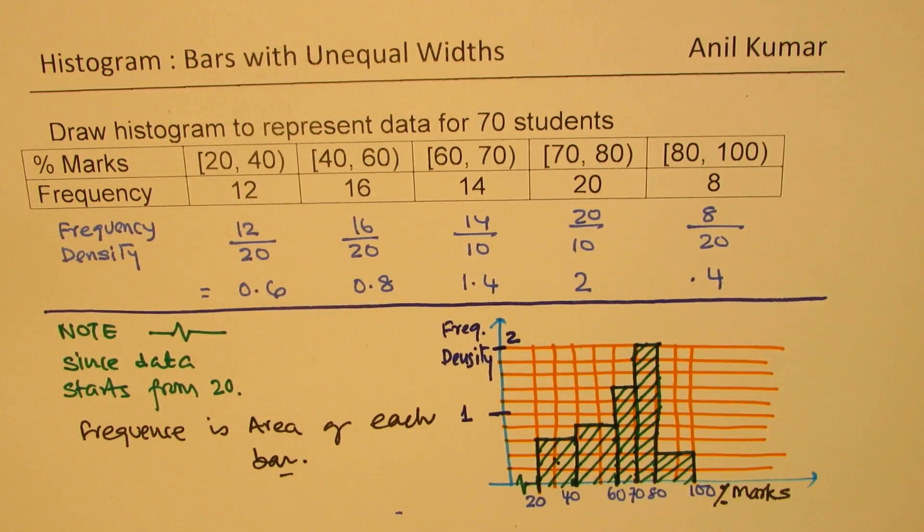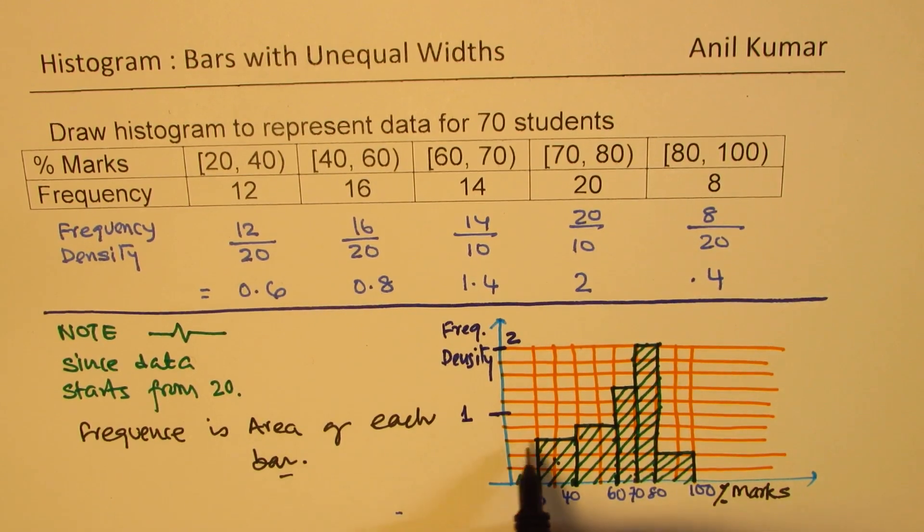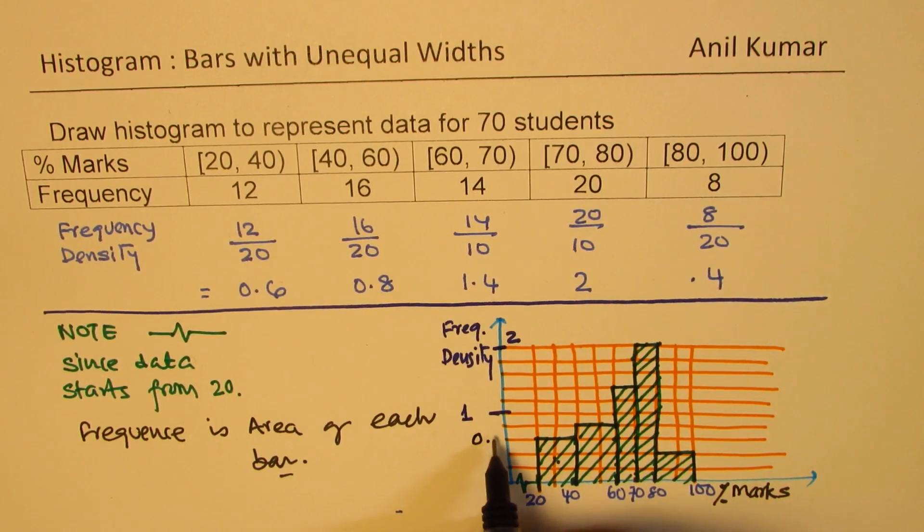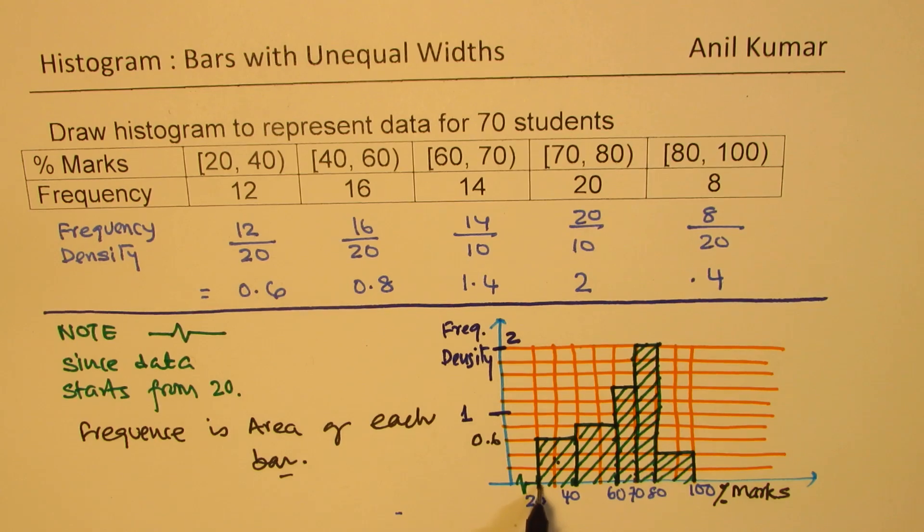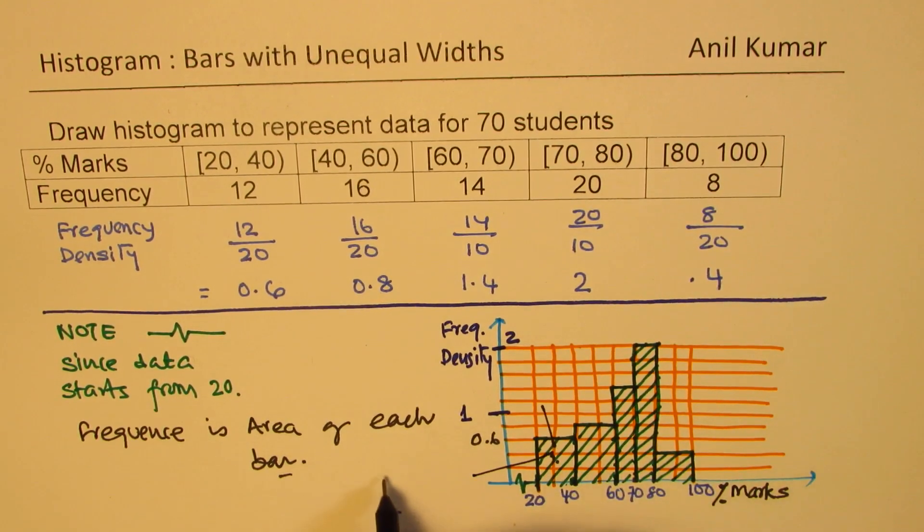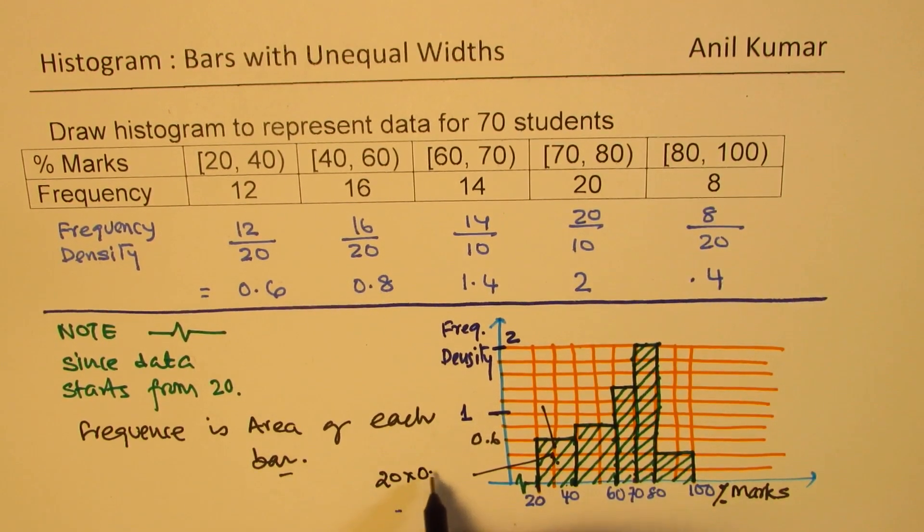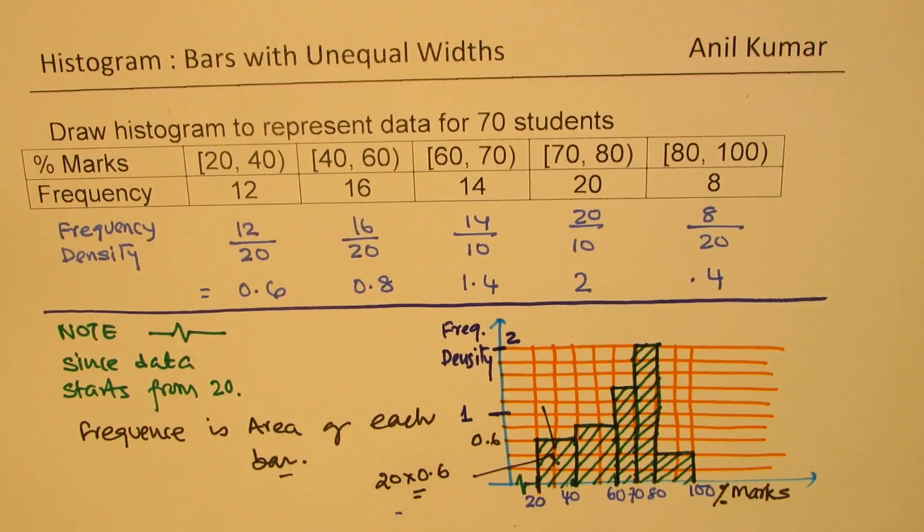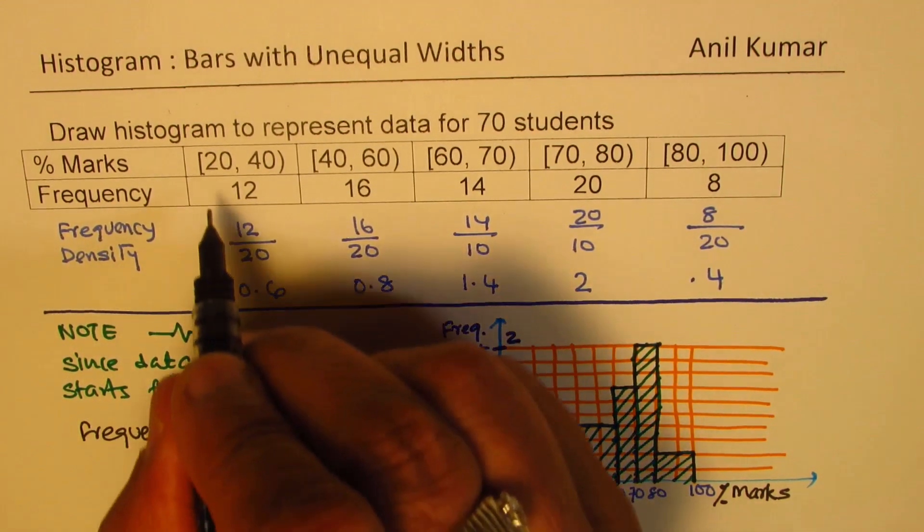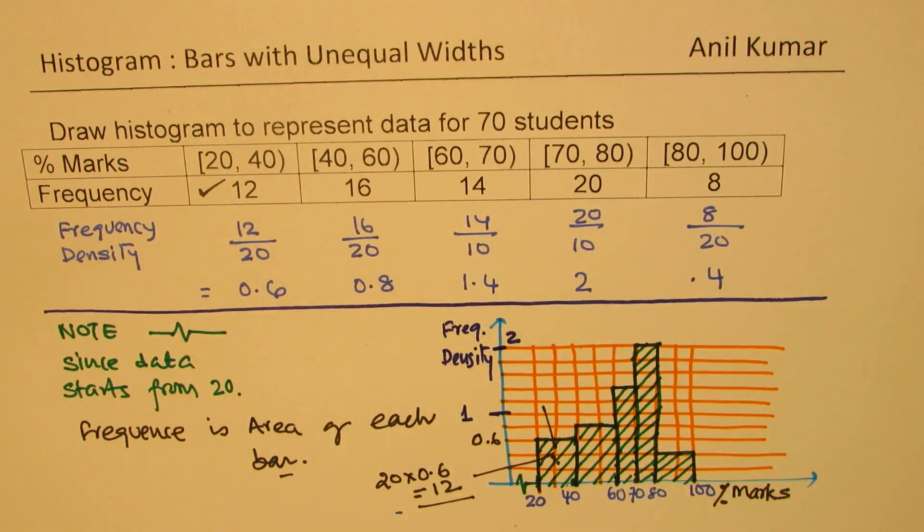That is how we find the frequency. In the first case, the area will be 20 times 0.6. This area gives you 12 as your frequency. That's how to calculate the frequency if the histogram is given to you.